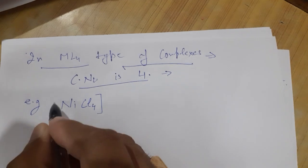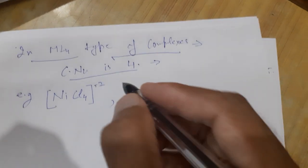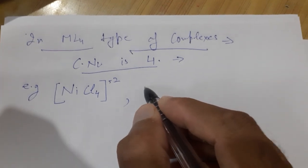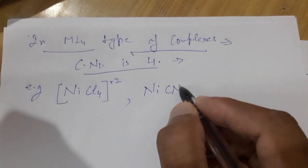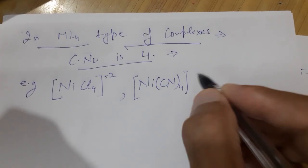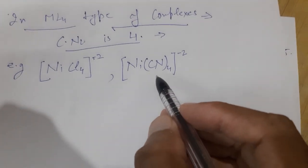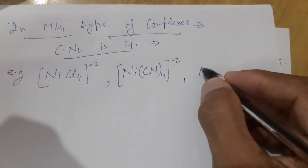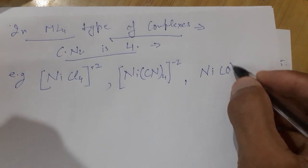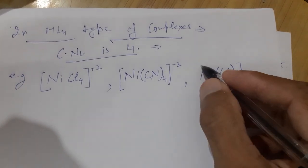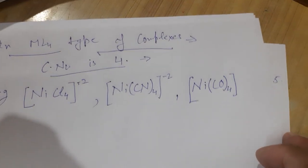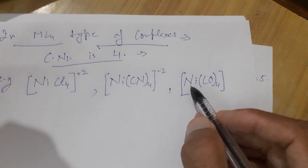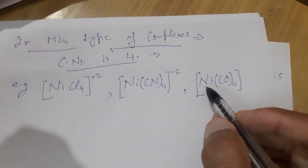The first example is NiCl4²⁻, that is tetrachloridoNicolate(2-). The second is NiCN4²⁻. The third is Ni(CO)4, which is a neutral complex with no charge, so its name is tetracarbonylnickel(0) — the oxidation state of nickel in this case is zero.